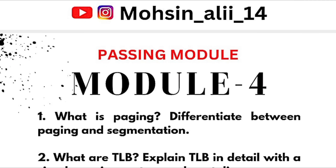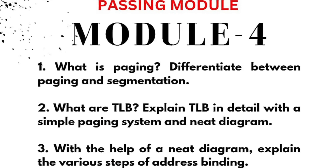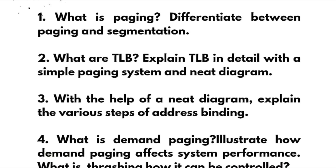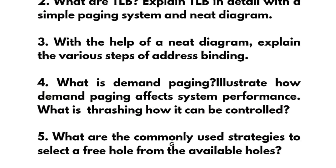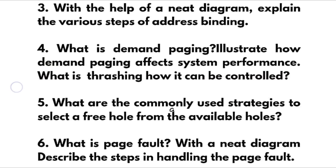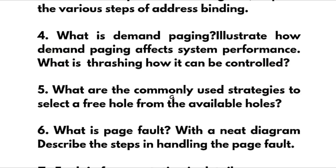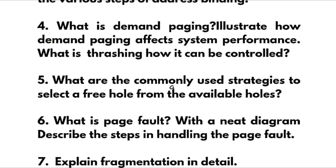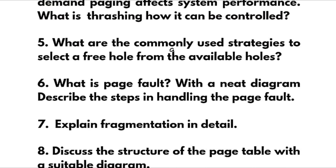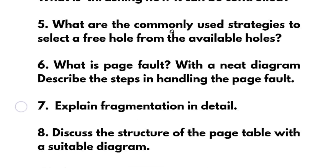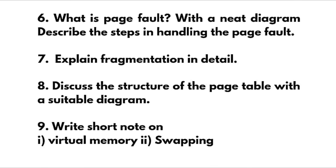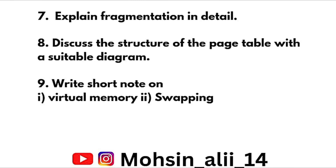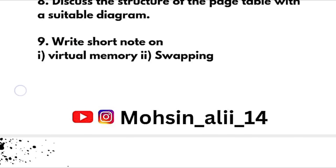Now passing module 4: What is paging? Differentiate between paging and segmentation. What are TLBs — explain TLB in detail with a simple paging system and neat diagram. With a neat diagram, explain the various steps of address binding. What is demand paging — illustrate how demand paging affects system performance. What is thrashing and how can it be controlled? What are the commonly used strategies to select a free hole from available holes? What is a page fault — describe the steps in handling a page fault. Explain fragmentation in detail. Discuss the structure of the page table and write a short note on virtual memory and swapping.